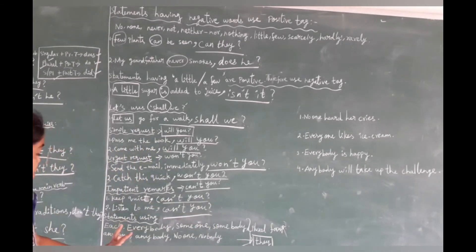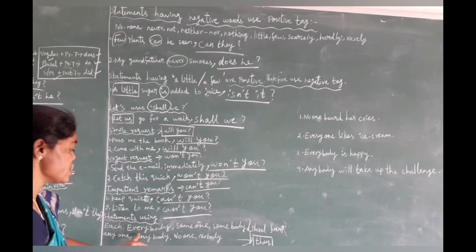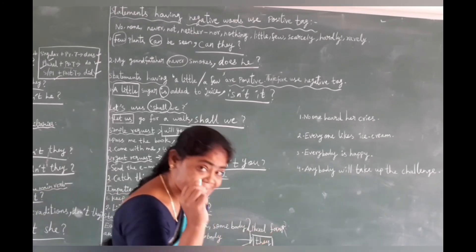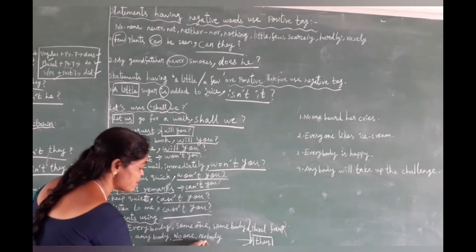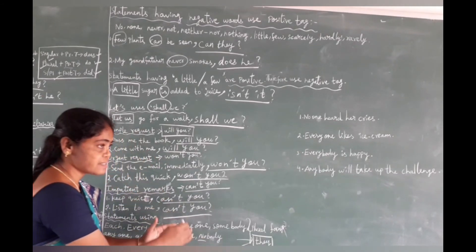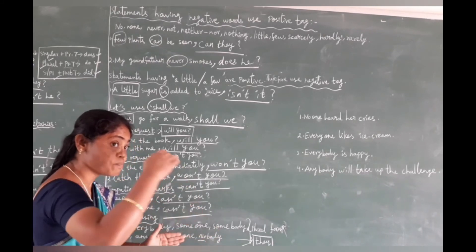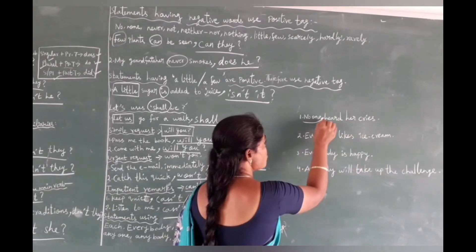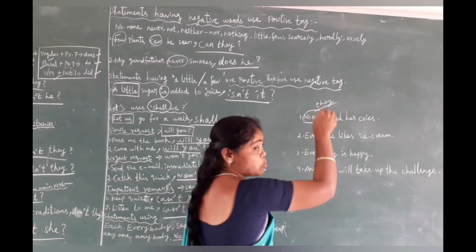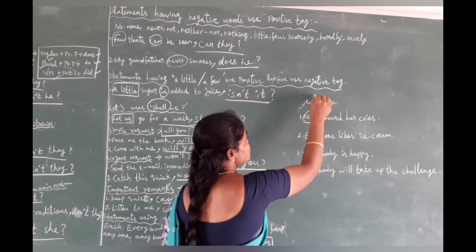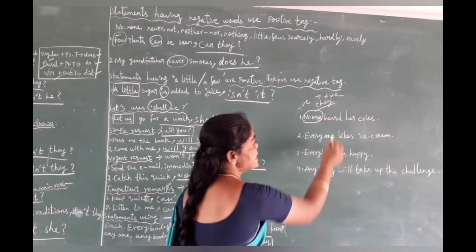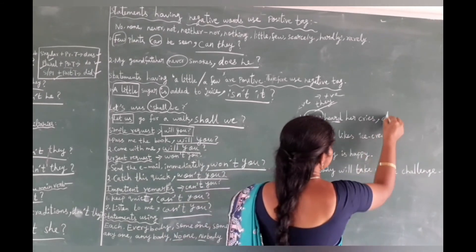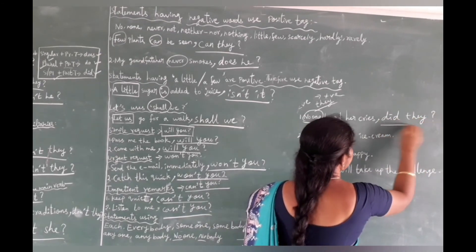Now remember: when a statement uses words like 'each', 'everybody', 'someone', 'somebody', 'anyone', 'anybody', 'no one', 'nobody' — these take plural form 'they' in the tag. Also, 'no one' and 'nobody' are negative words, so they take a positive tag. Example: 'No one came to the party.' Past tense, so we use 'did'. Negative statement takes positive tag: 'did they?'